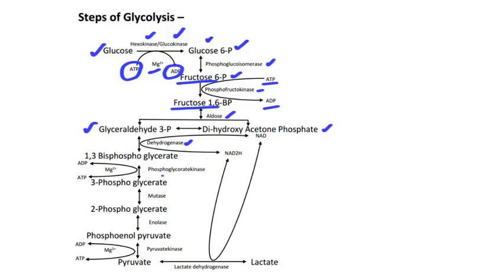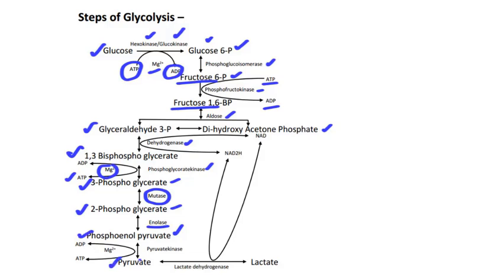Next, 1,3-bisphosphoglycerate produces 3-phosphoglycerate in the presence of phosphoglycerokinase enzyme and magnesium ion, and here 1 ATP is produced. In the next step, 3-phosphoglycerate is converted into 2-phosphoglycerate in the presence of mutase enzyme. Then, 2-phosphoglycerate is converted into phosphoenolpyruvate in the presence of enolase enzyme. Phosphoenolpyruvate produces pyruvate in the presence of pyruvate kinase and magnesium ion, producing 1 ATP.